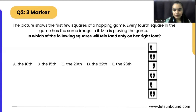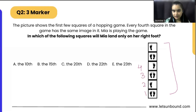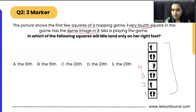Now if we look at the squares carefully — this is first, this is second, this is third and this is fourth. Every fourth square of the game has the same image in it, so after four, the same pattern is going to start.